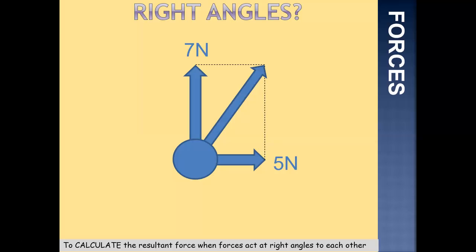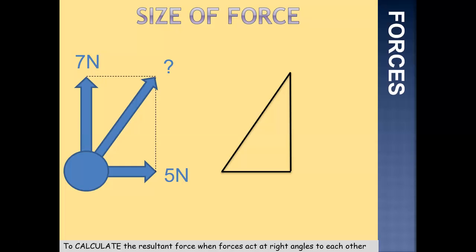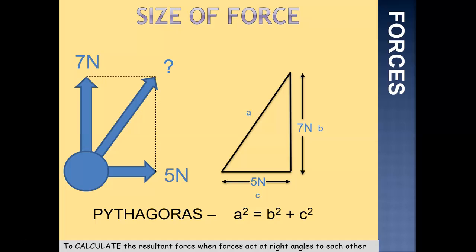We'll talk about direction in a bit more detail later on. But how can we work out the size of this force? If we look at the angle of the overall force and draw that in, we'll see we have a right angle triangle. We know that the force acting up is 7 newtons and the force acting across is 5 newtons. We know the direction in which that force is going to act — we'll assign that later. If we assign them letters A, B, and C, and think back to any math lessons, anything where you're trying to work out the hypotenuse of a right angle triangle, we would use Pythagoras' theorem, where the square of the hypotenuse is equal to the square of the other two sides added together: A squared equals B squared plus C squared.